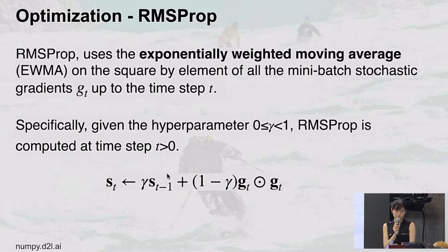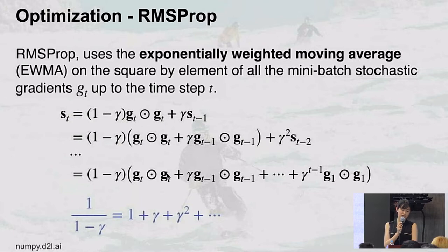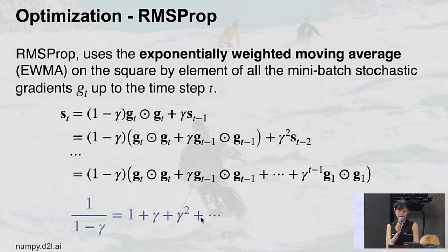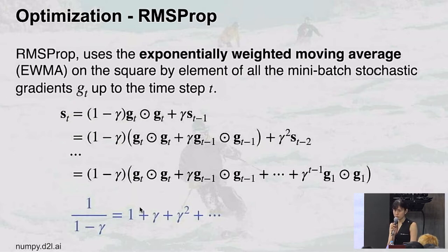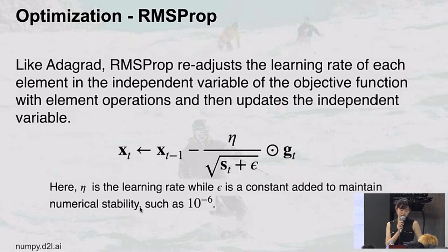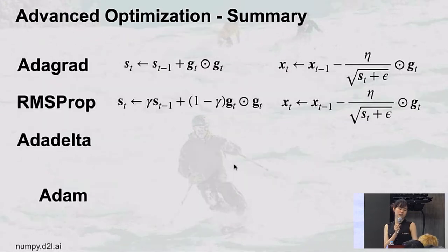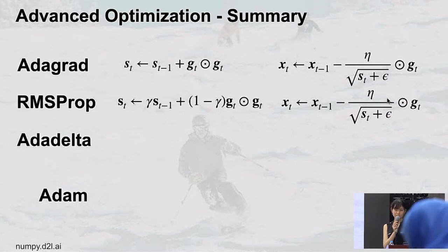The name EWMA comes from the fact that the weights decay exponentially as γ, γ², etc., and the sum converges to 1/(1−γ). That's the intuition behind 'exponential weighted moving average.' Once we have this new s_t computed via EWMA, we plug it into the same learning rate update formula as AdaGrad. The update rule is similar, but s_t is computed differently, which avoids the runaway accumulation problem.